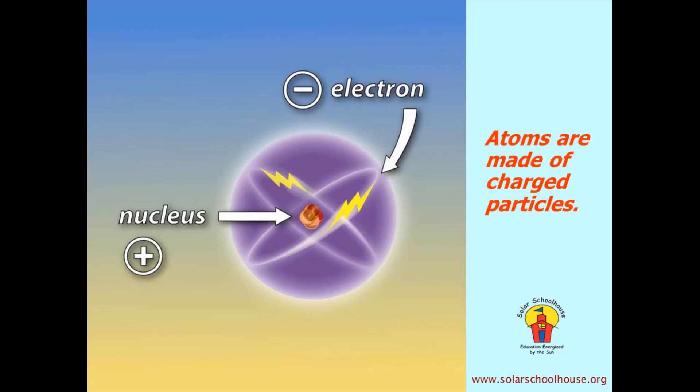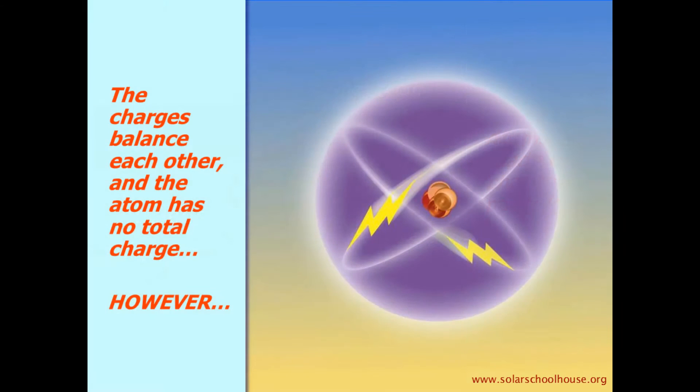Electrons are particles of electricity that have a negative electrical charge and orbit around the center of the atom, which is called the nucleus. The nucleus has a positive charge, so we have negatively charged electrons orbiting a positively charged center. The negative and positive charges in this atom balance each other out, and the atom has no electrical charge. However,